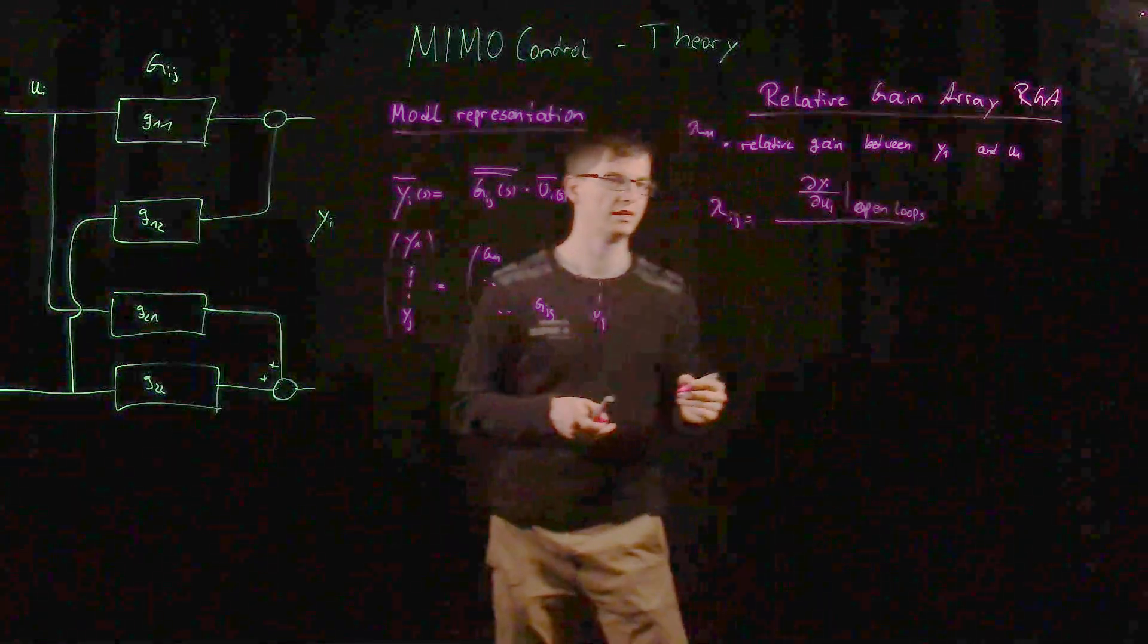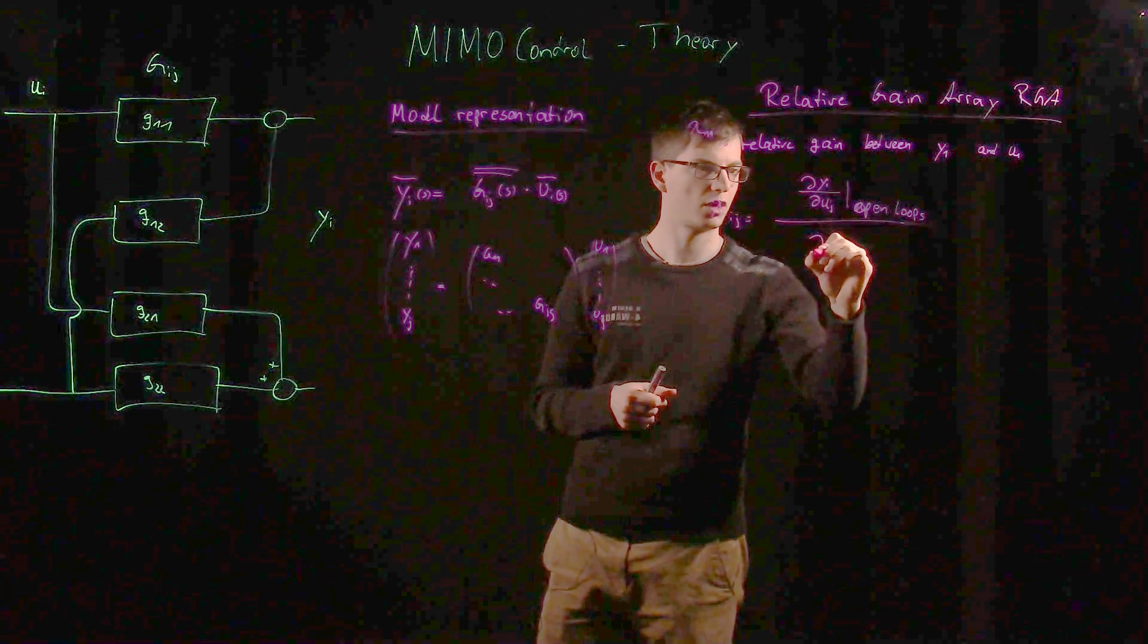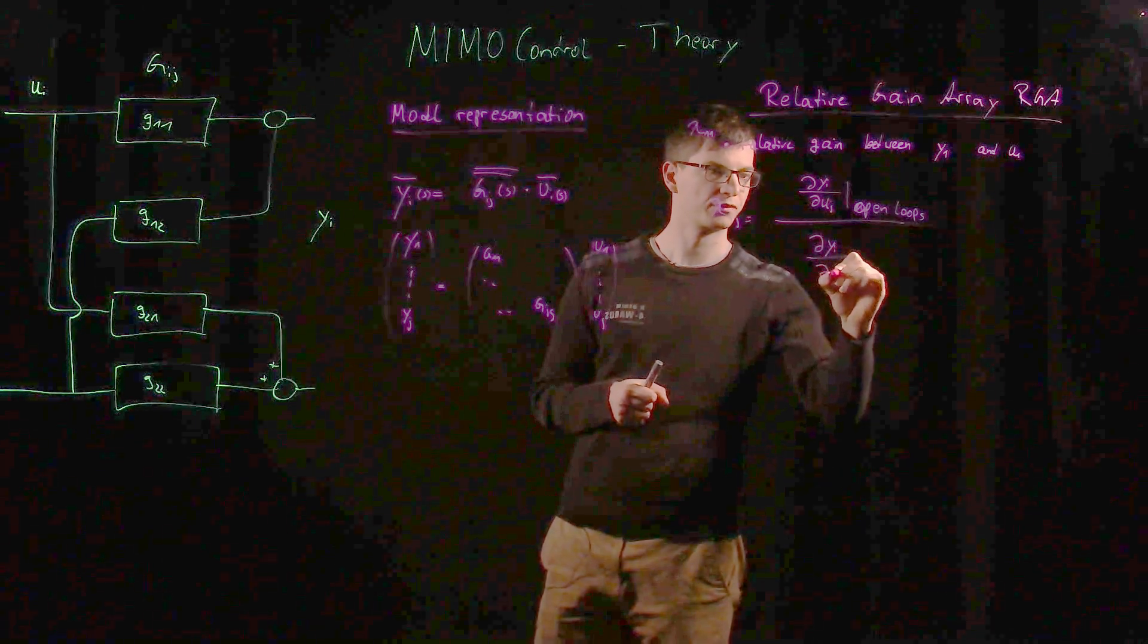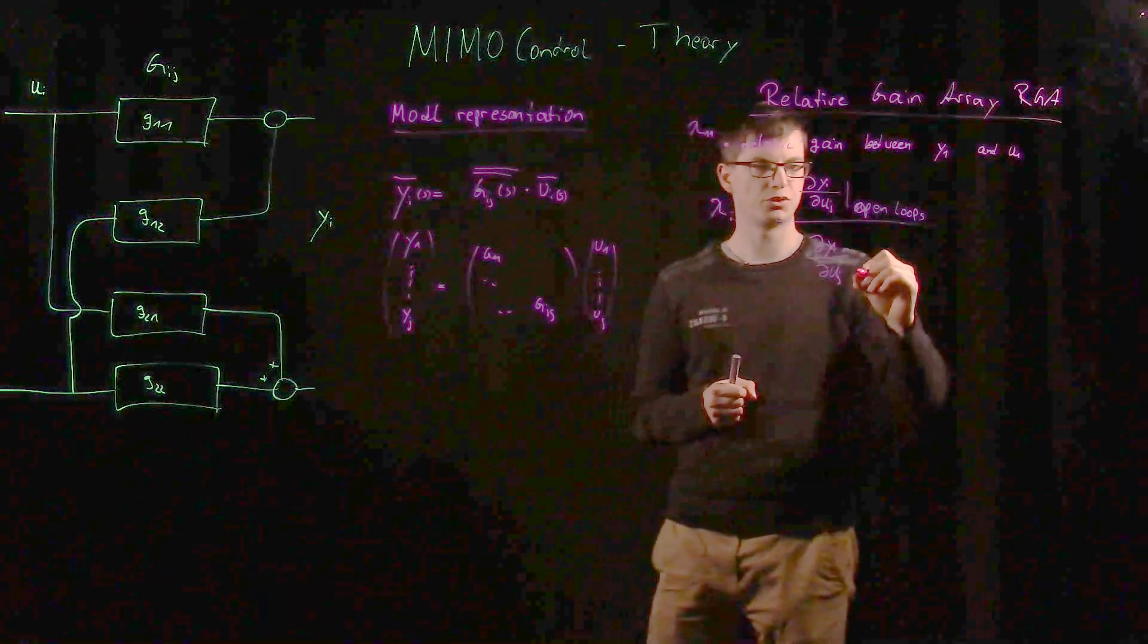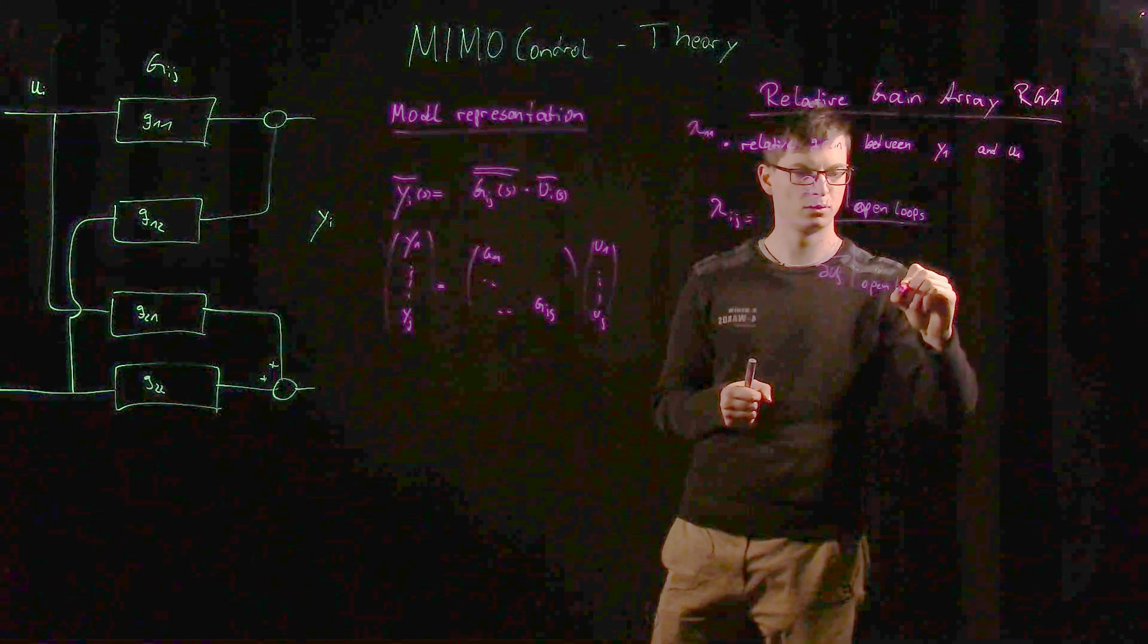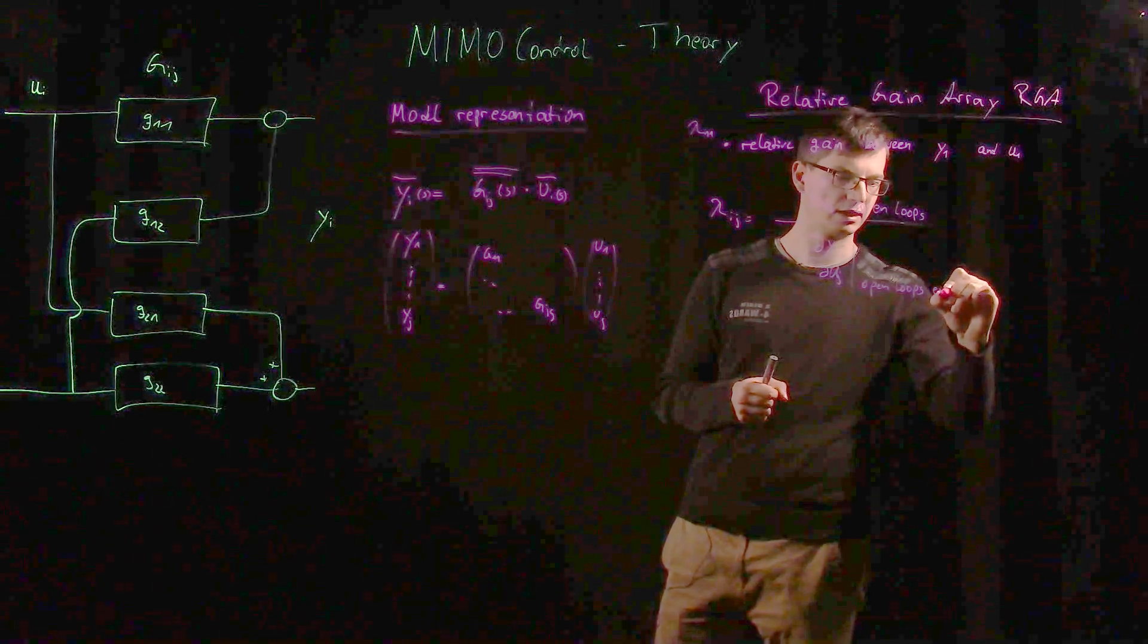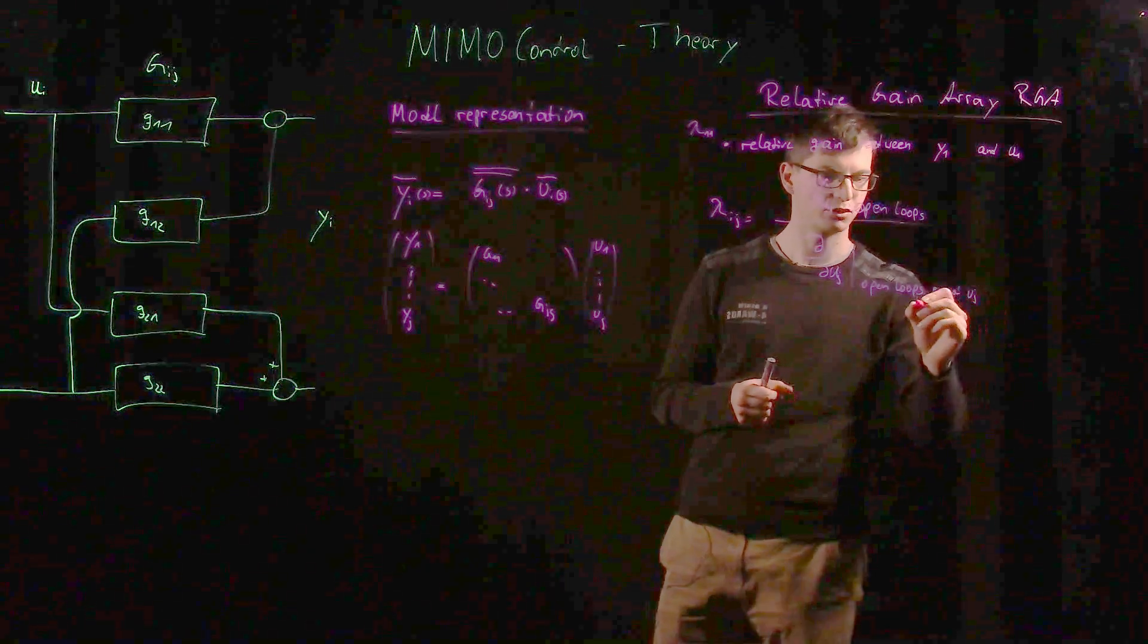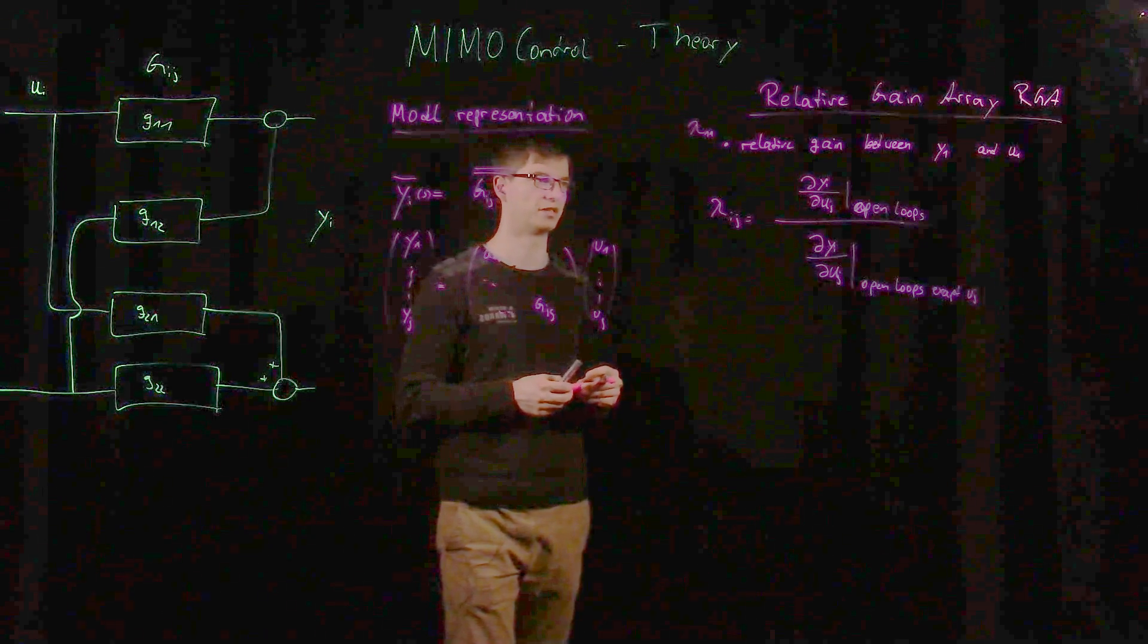And we divide it by partial y_e over partial u_j, all loops open except this u_j loop. So this is important, and that's how we would write down this mathematically.